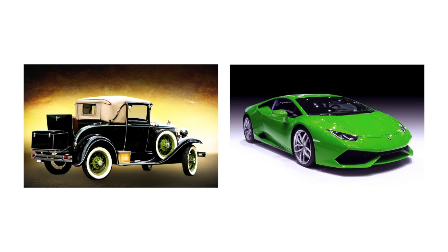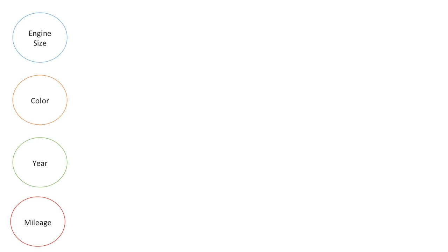It's a matter of understanding which features you want to use going forward. In this example, trying to predict the price of a car, let's take four key features: engine size, colour, year, and mileage. These are the inputs, and we're really trying to use those to predict the price. We'll have a set of data with this information about cars, and we'll also have a set of data that has the price of cars.